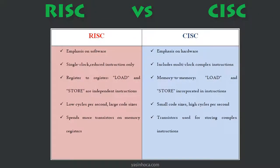Comparing CISC and RISC: CISC emphasizes hardware, while RISC emphasizes software. CISC includes multi-clock complex instructions, whereas RISC uses single-clock reduced instructions only. For memory access, CISC uses memory-to-memory load and store incorporated within instructions, while RISC uses register-to-register load and store as independent instructions.